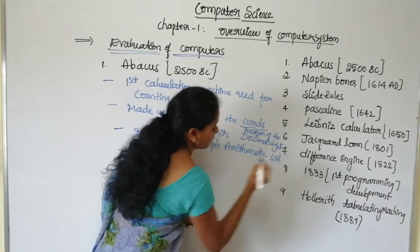The second tool is Napier's Bones. This was developed in the year 1640 AD by John Napier. Napier's Bones are made up of bones and are used for calculation.